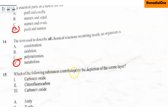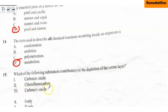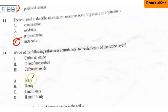Question fifteen: which of the following substances contributes to the depletion of the ozone layer? I. carbon monoxide (CO), II. chlorofluorocarbons (CFCs), III. carbon dioxide (CO2). Options: A. I only, B. II only, C. I and II only, D. II and III only. The ozone layer protects us from harmful UV radiation. The correct options are CFCs and carbon dioxide — carbon monoxide is not part of the substances that deplete the ozone layer. So the correct option is D.